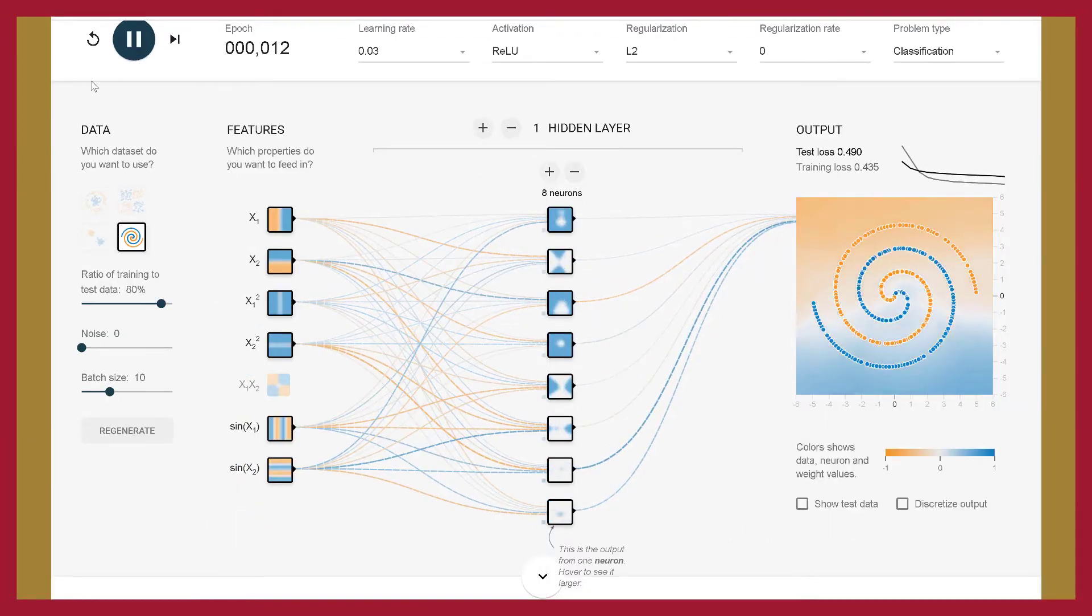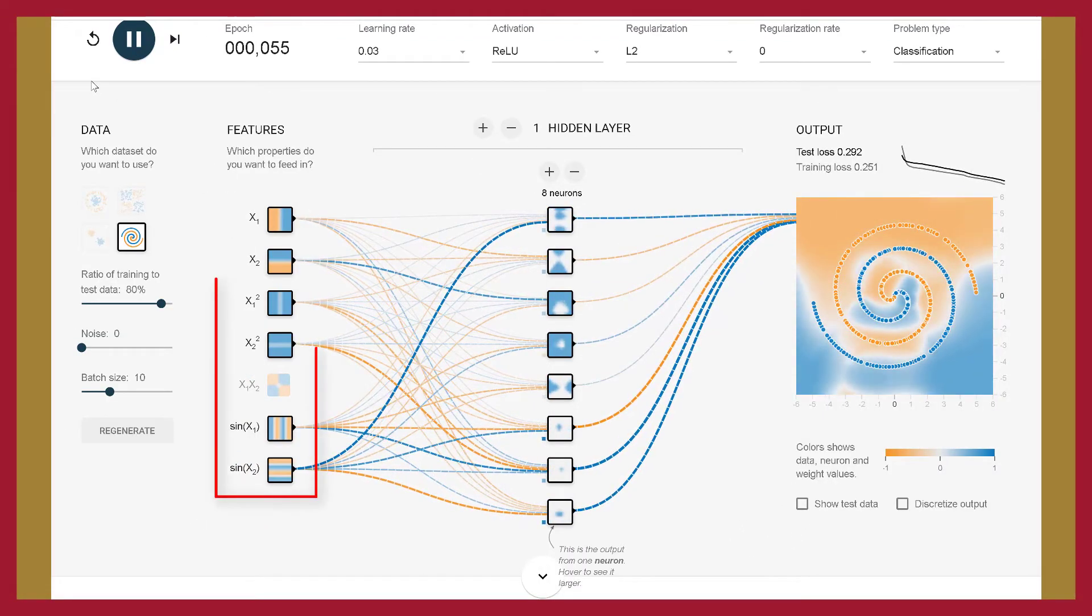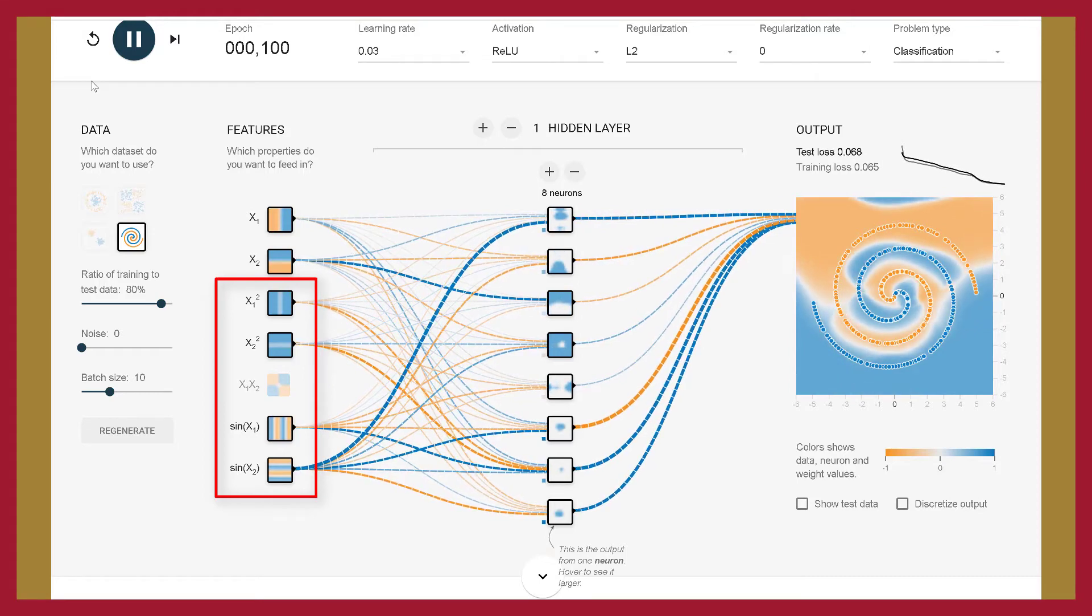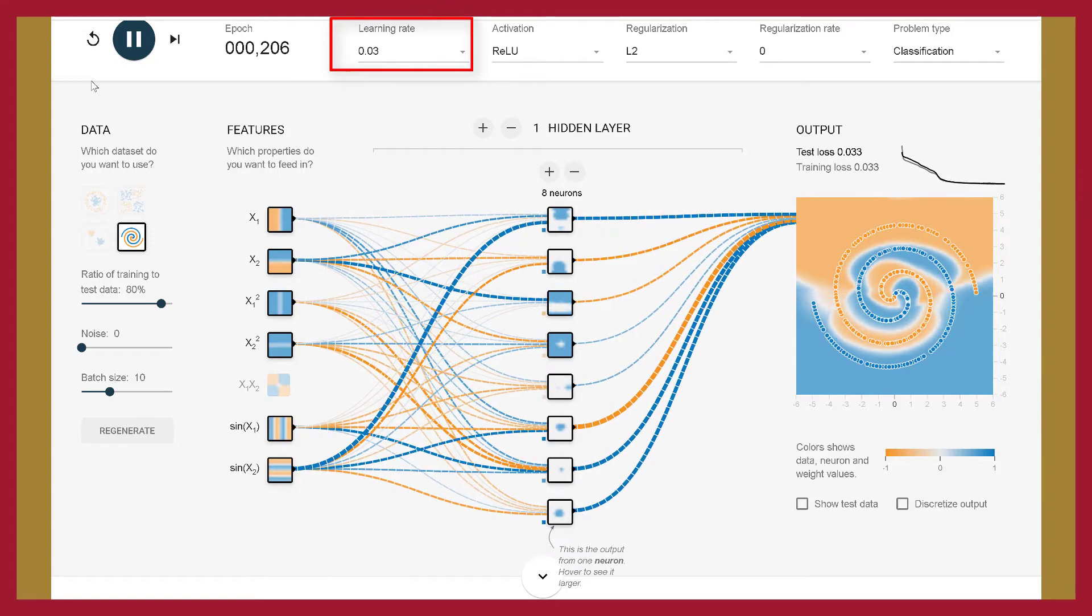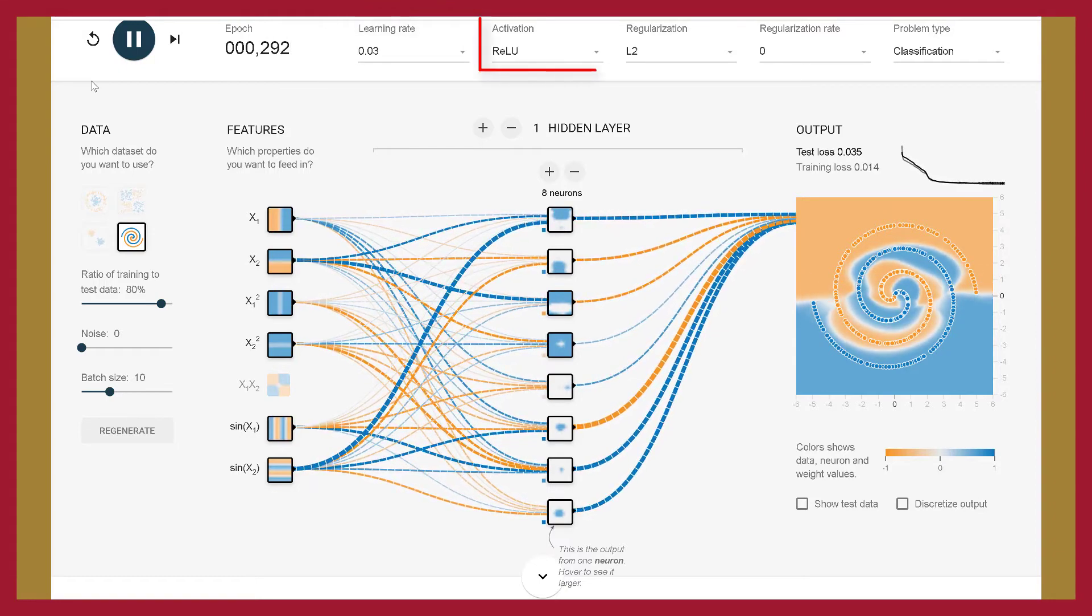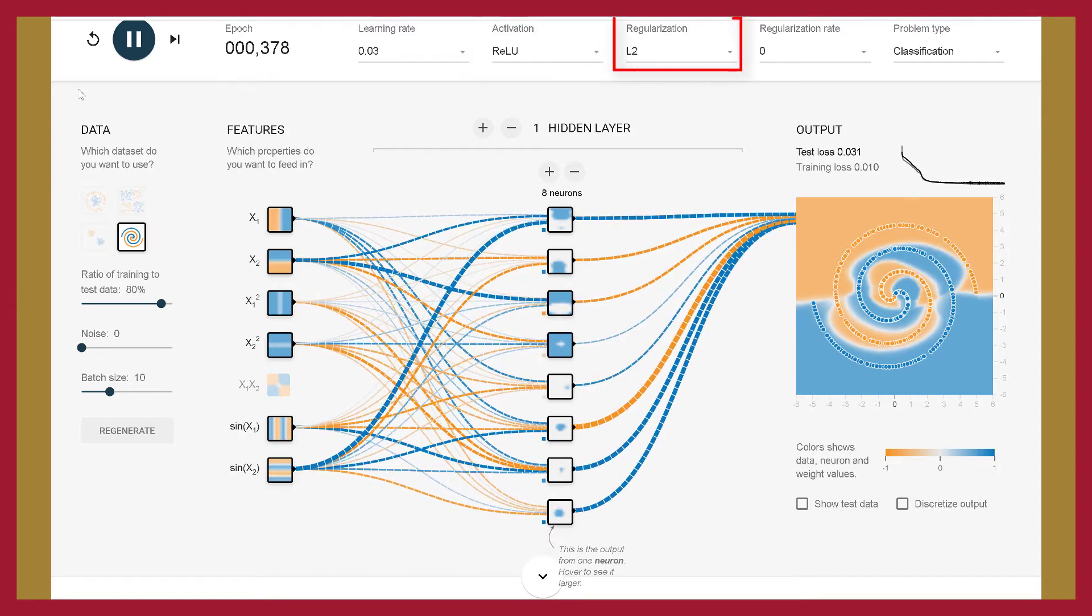I decided to perform feature engineering by adding X squared and sine X features. Given a total of six input features, I reduced the learning rate to 0.03 when I noticed the learning was unstable. I then changed the activation function from TanH to ReLU. I also used L2 regularization to reduce overfitting since the test loss was high.